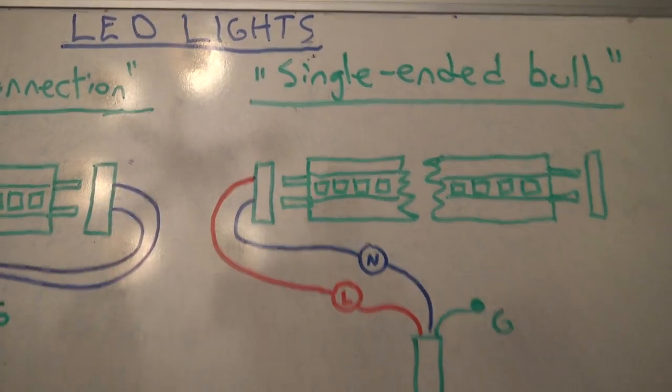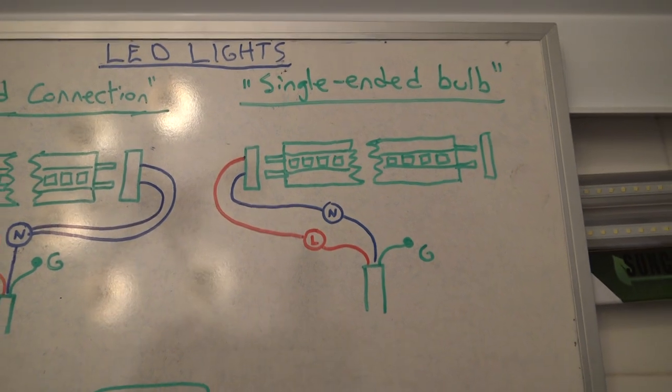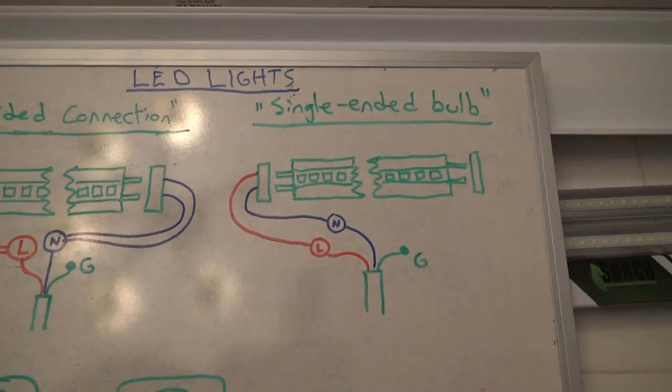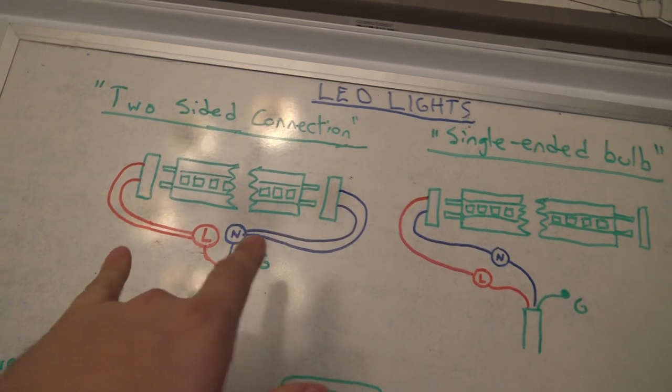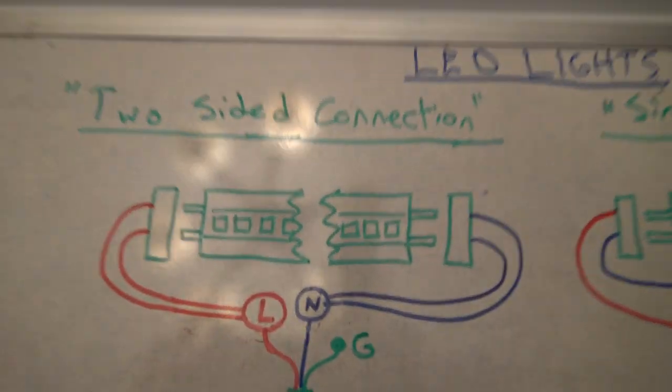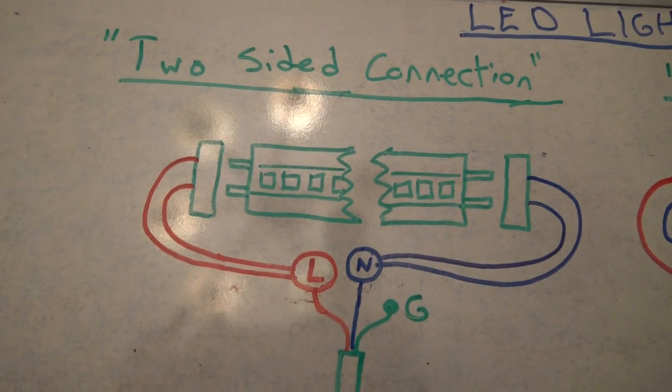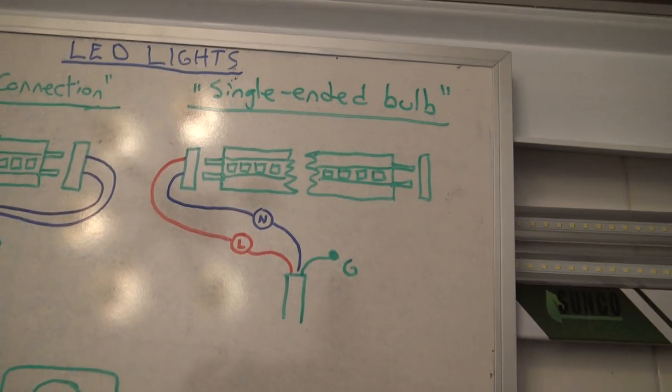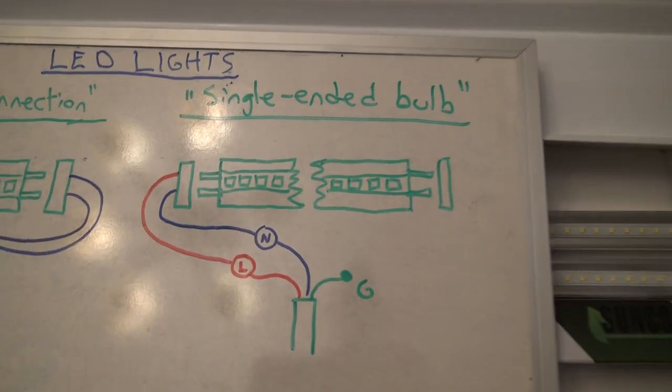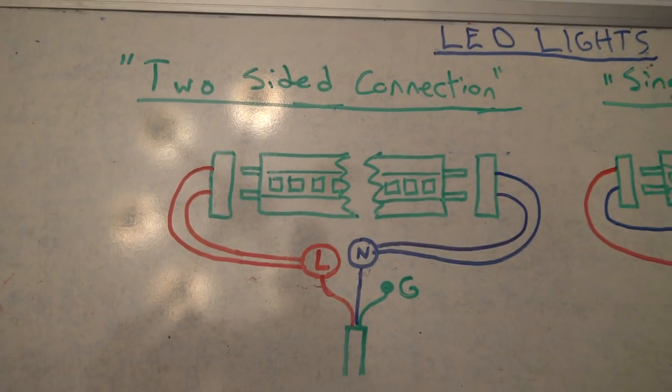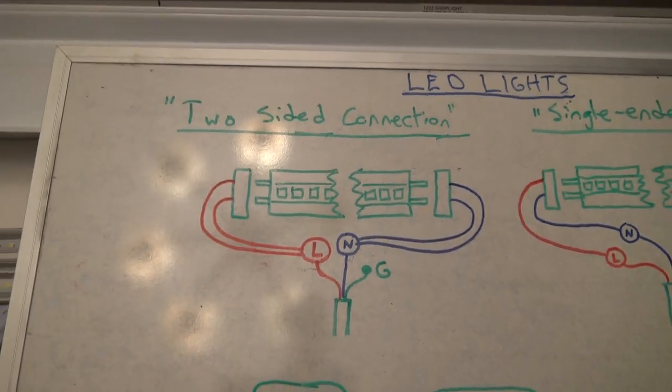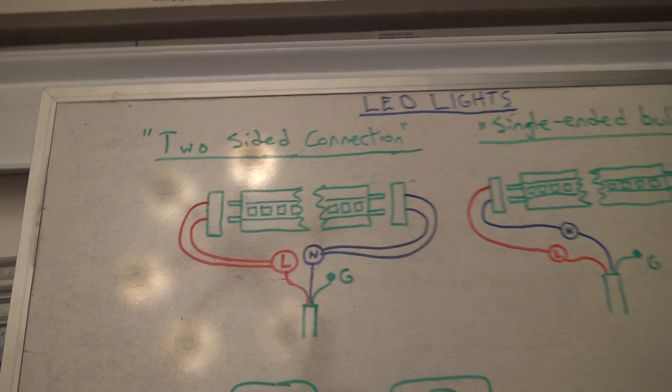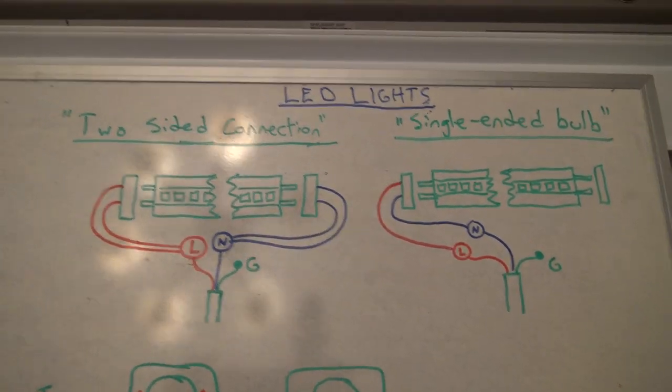So that is really important. Because if you wire up a fixture for LEDs, you're going to need to wire it differently, as you can see from these diagrams, for a two-sided bulb versus a single-sided bulb. So when you're shopping for LED lights, make sure that you look for either single-ended or two-ended bulbs. And depending on how you want to wire it up or what you buy, these are the basic diagrams that you're going to be looking at.